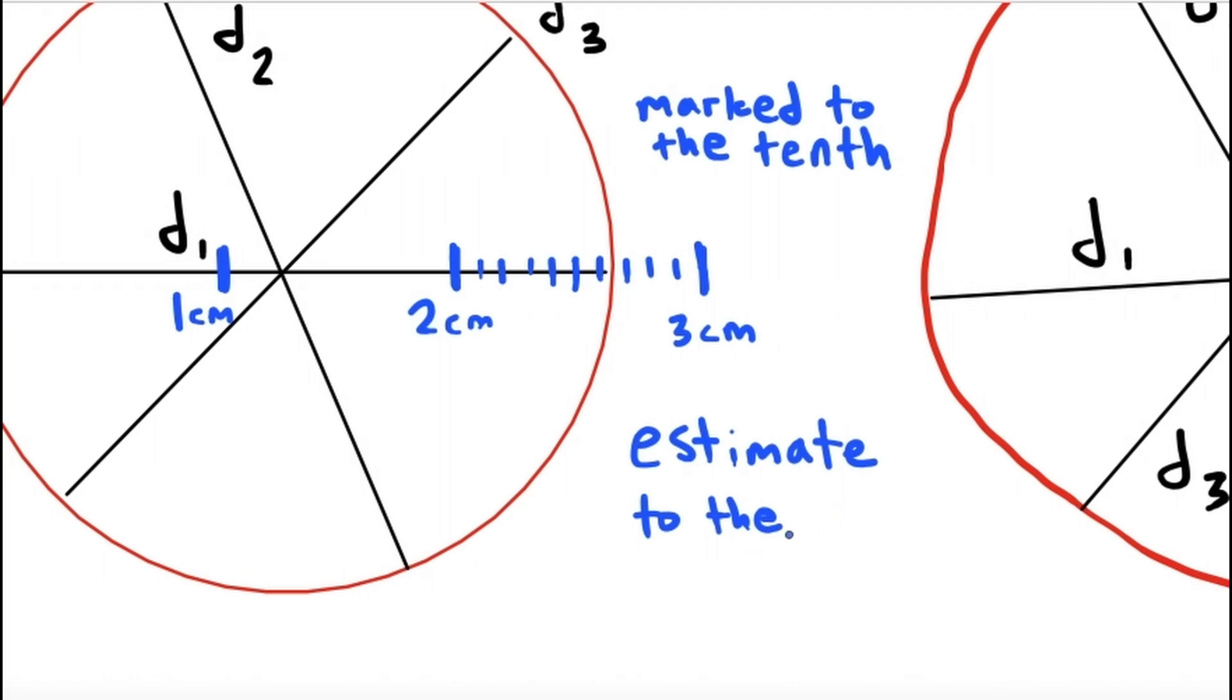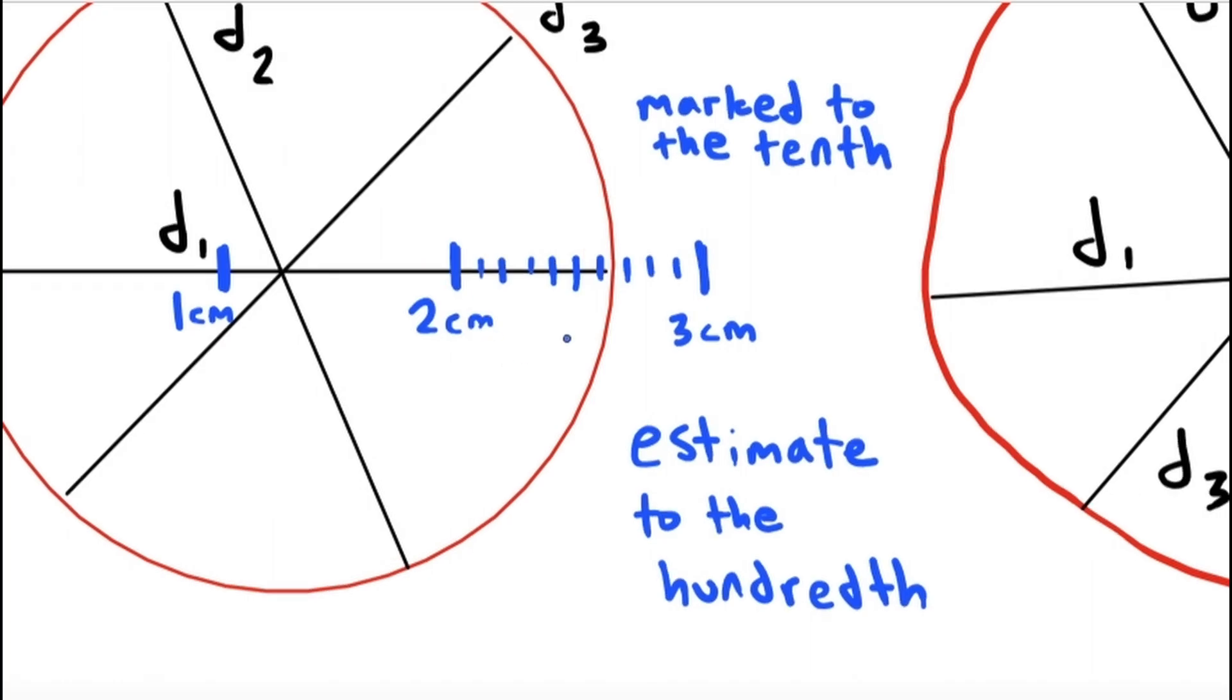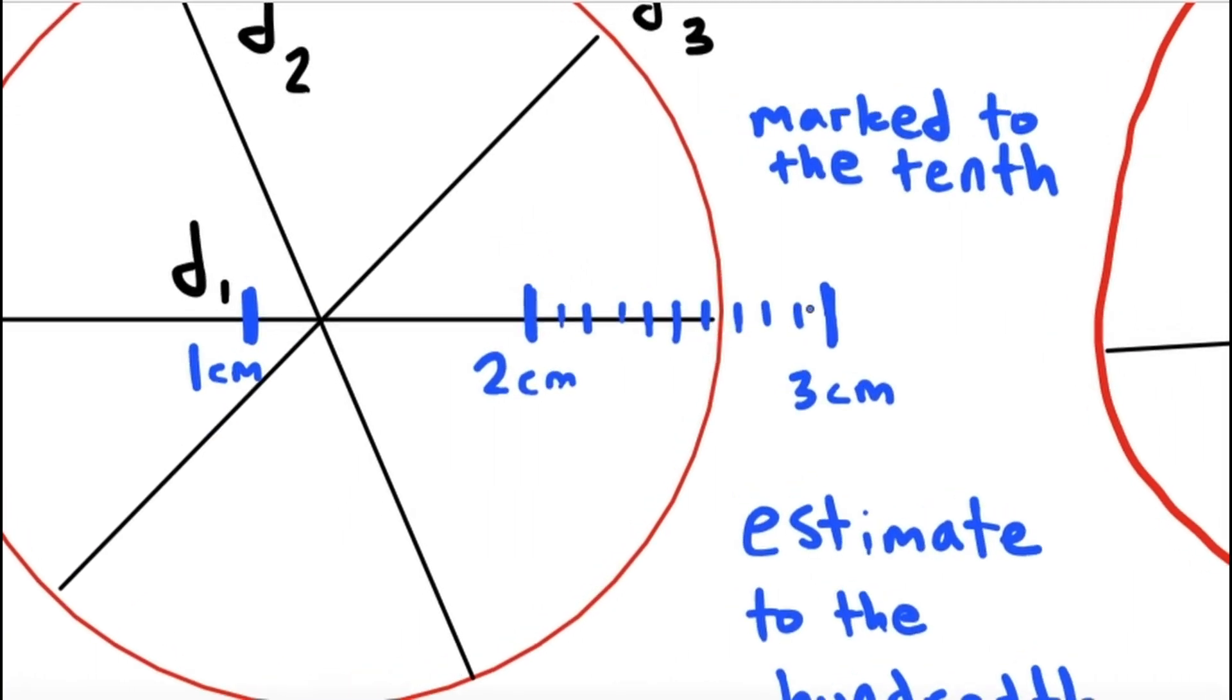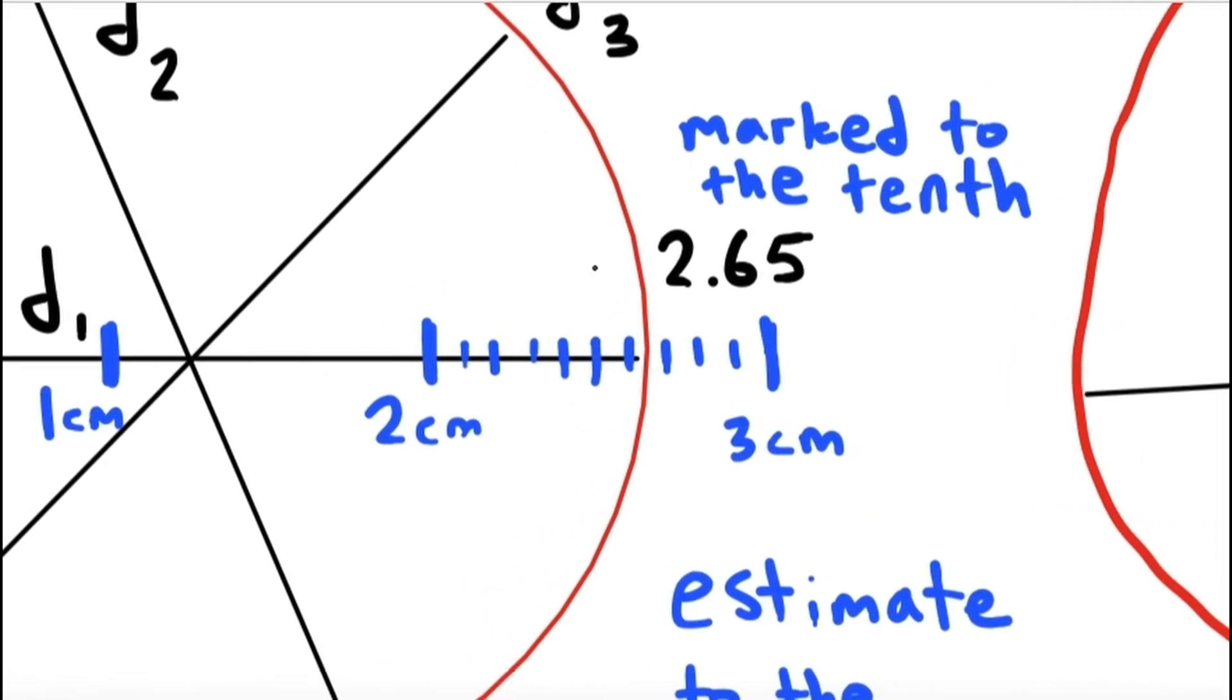So what we have is we have 10 subdivisions of the centimeter. Now as the person making the measurement, you are expected to guess one digit beyond what the ruler is even marked to, trying to make the right measurement for the right instrument. So here we are marked to the tenth. So we are justified in estimating to the hundredth.